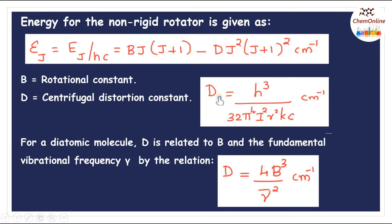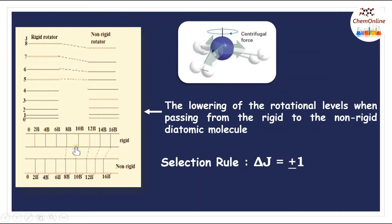It is clear that centrifugal distortion effects are greatest for molecules with small moments of inertia and small force constants. In a given molecule, the effect of centrifugal distortion is to decrease the rotational energy, and this decrease increases rapidly for higher rotational states. As shown in the diagram, the left side represents the energy levels of a rigid rotator and the right side represents the energy levels of a non-rigid rotator, showing the lowering of rotational levels due to the centrifugal distortion term.